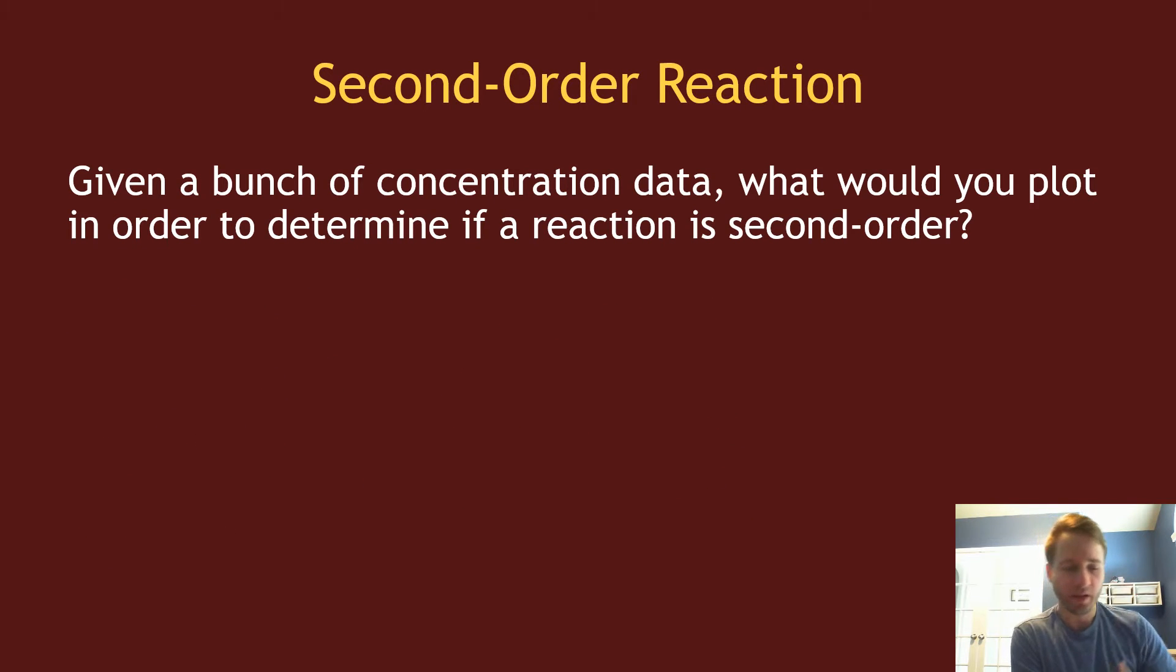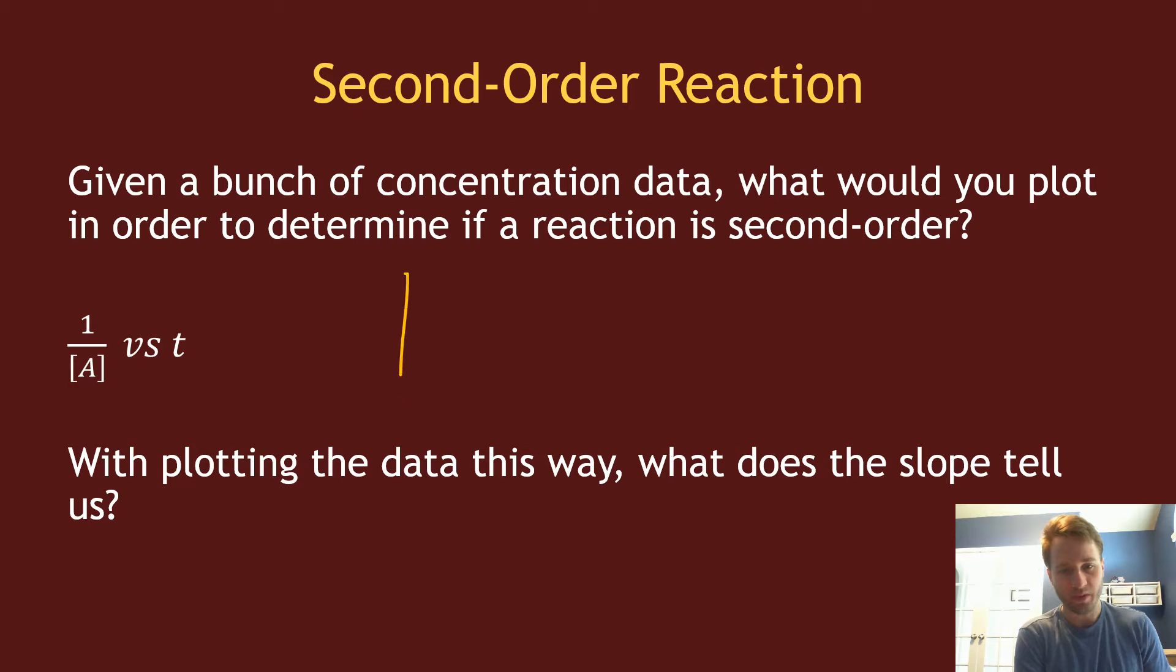In lab, you measure your concentration and question what is the order of this reaction. If you want to find out if it's second order, we need to plot one over the concentration versus time. If we do that and get a straight line, it will look something like this, where that y-intercept is one over the initial concentration and the slope is equal to the rate constant.